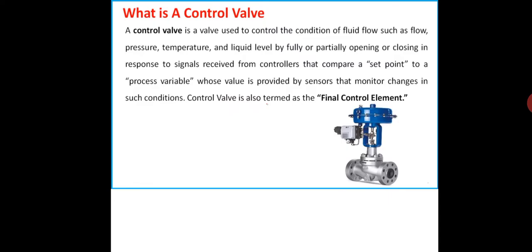The control valve works with the condition of fluid flow. For a pneumatic valve, air pressure is responsible for controlling or displacing the plunger. The stem or plunger shifts by partially opening or closing in response to the signal received from the controller — the final control element acts only on the signal sent by the PID controller or other advanced controllers.